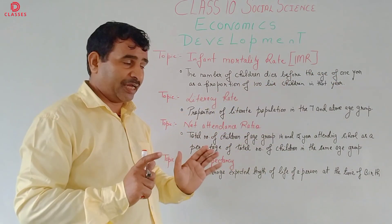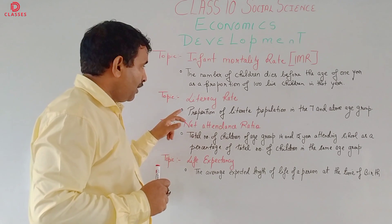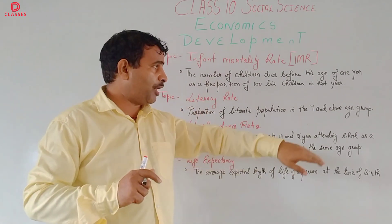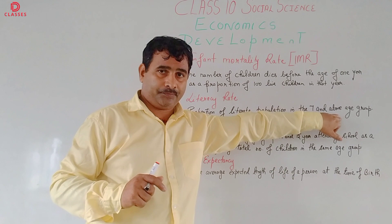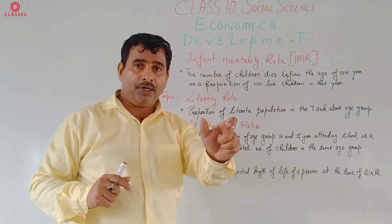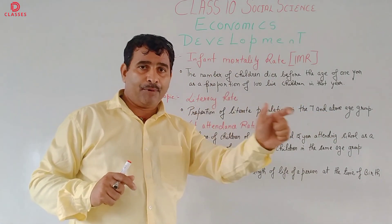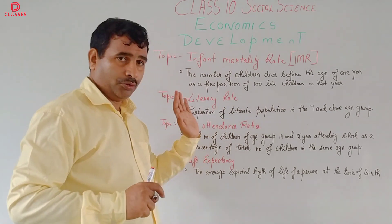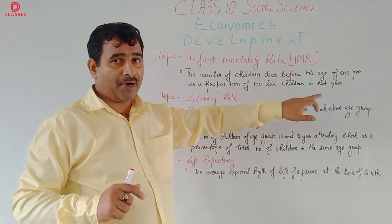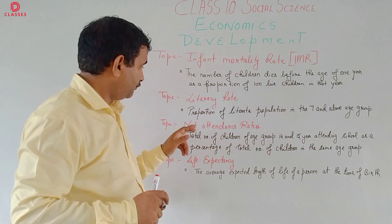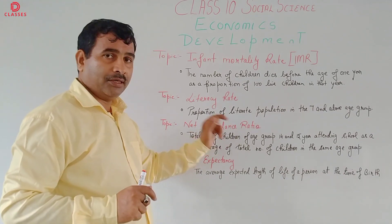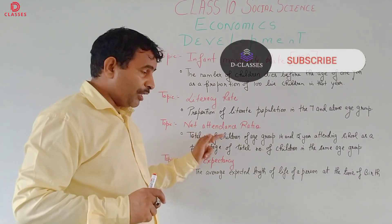It is expressed as a percentage. The Literacy Rate covers only the population of age seven and above. If they are able to read and write, they are considered literate. So the Literacy Rate is calculated for the age of seven and above.